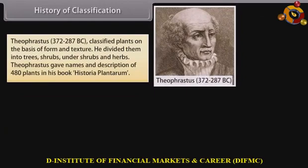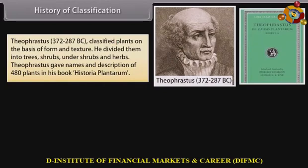Theophrastus (372–287 BC) classified plants on the basis of form and texture. He divided them into trees, shrubs, undershrubs, and herbs. Theophrastus gave names and descriptions of 480 plants in his book Historia Plantarum.